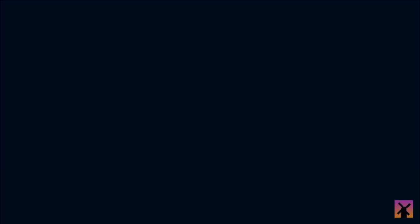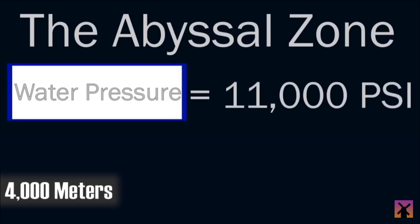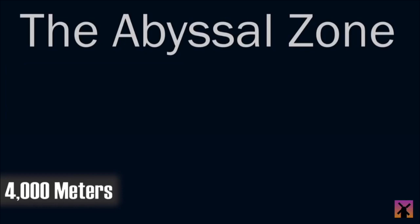And a bit past that, at 4,000 meters, we start to enter the abyssal zone of the ocean. Water pressure is at an astonishing 11,000 pounds per square inch down here, and there are numerous strange, almost alien-like creatures that inhabit these depths, such as the fangtooth, anglerfish, and viperfish. I wonder if all those fishes are relatives?